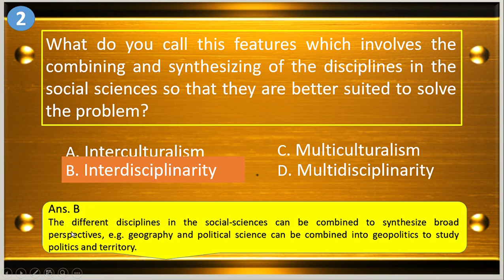The different disciplines in the social sciences can be combined to synthesize a broad perspective. For example, geography and political sciences can be combined into geopolitics to study politics and territory.